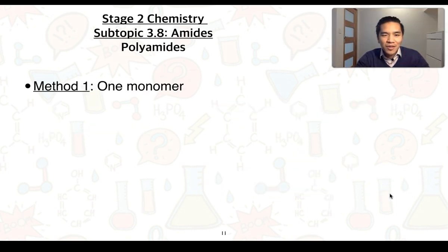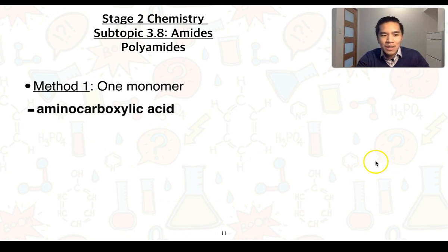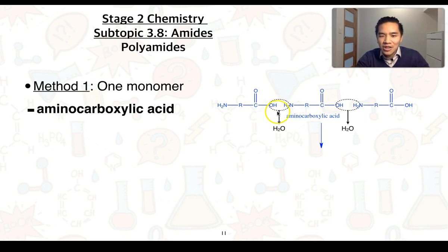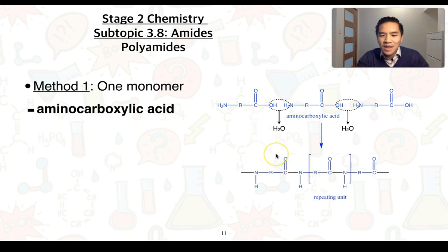If you've watched subtopic 3.8 on amides, you would have seen these slides already. For polyamides produced from one monomer — an aminocarboxylic acid — the amino group associates with the carboxyl group instead of a hydroxyl group. Water is eliminated and amide functional groups are formed. Those amide functional groups are shown in red, with the repeating unit in square brackets.